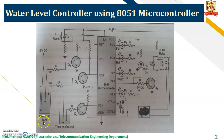This is the water head tank and this is a tank on the ground. Both tanks are filled with water. The supply is given as 5 volts to both tanks, and this is the connection diagram of the water level controller interfaced to the 8051 IC.